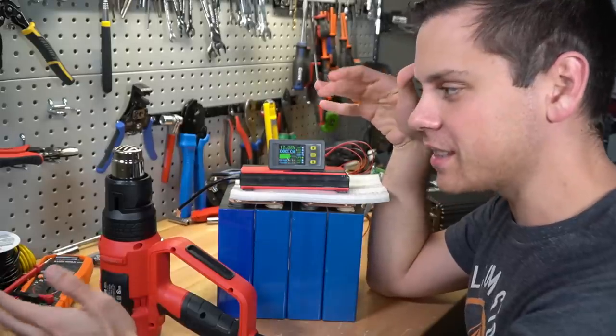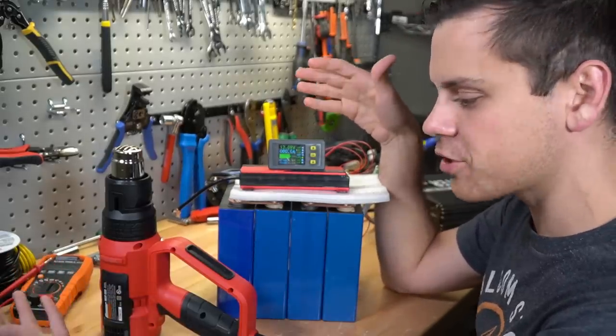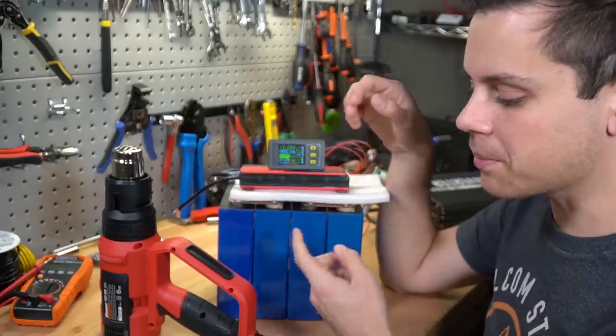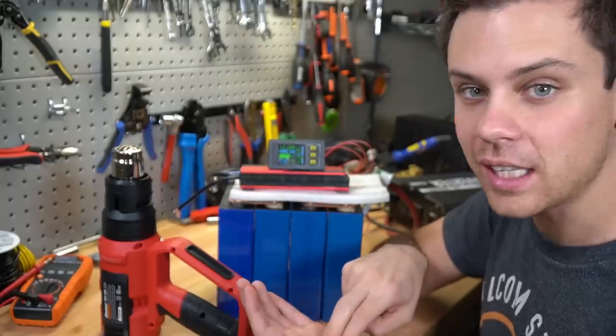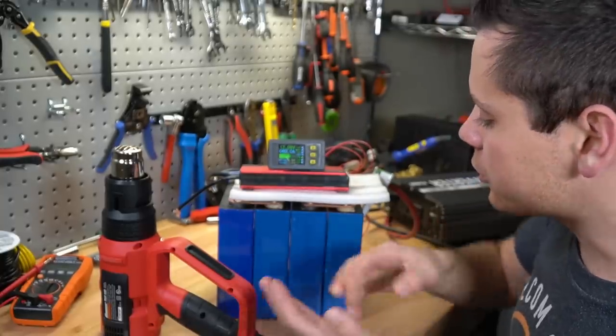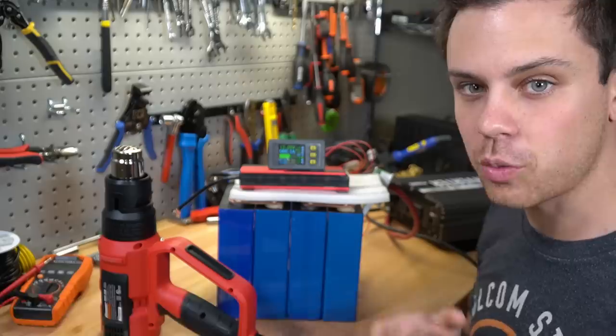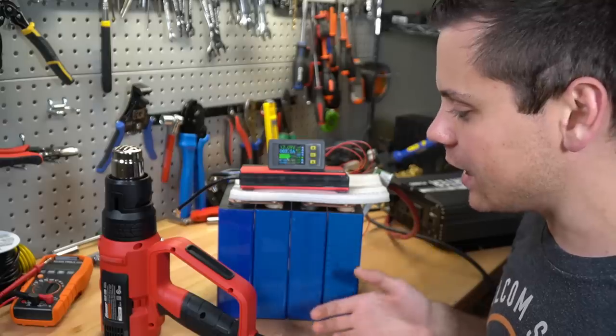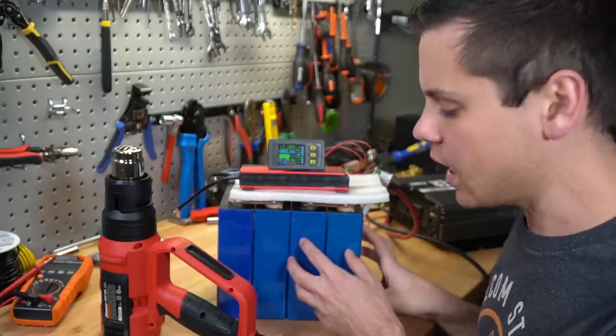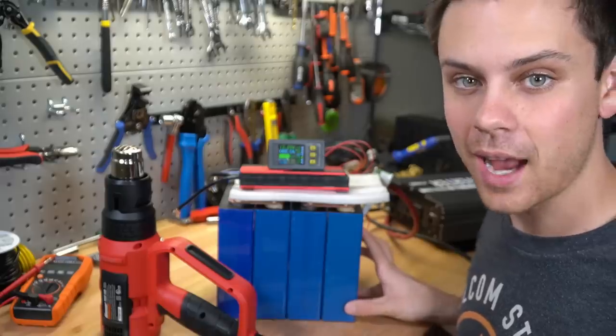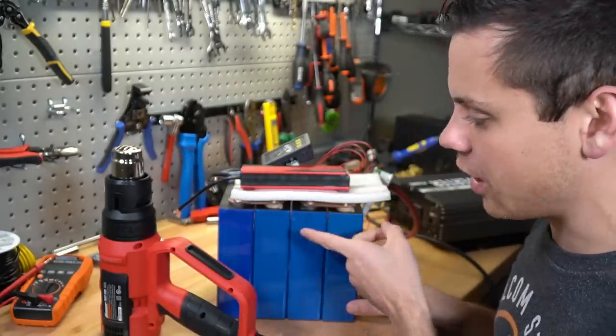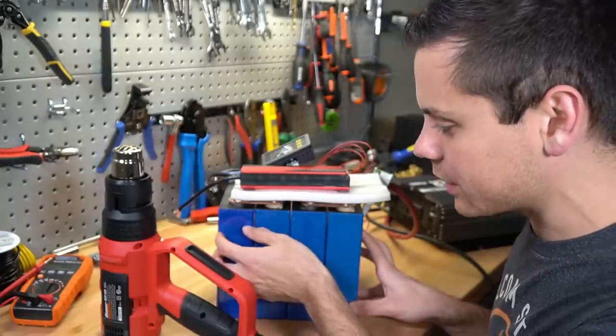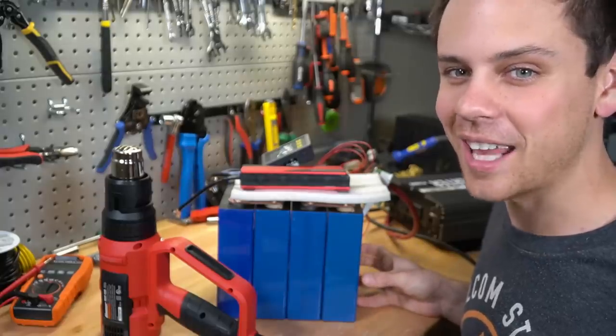And while I was running this test, I started thinking about why are they at 120 amp hours when if you look up these cells online when they're brand new, you can buy them at 100 amp hour or 150 amp hour capacities. So I did a little bit of math and 120 is 80% of 150. So what I'm thinking is that these are grade B cells that are used and they're down to 80% capacity. So that's why the barcodes are scratched out and they are mismatched. And you can even tell the difference in color. This one's wrapped differently. And that's what they're advertising them at is 120 amp hours.